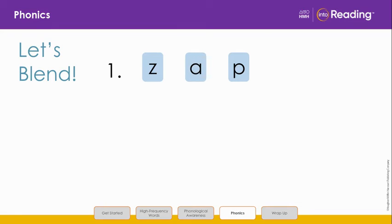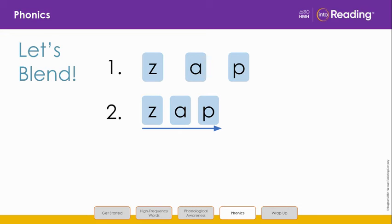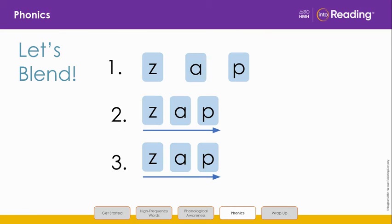We are going to blend the letters in line 1 to read another word. Say the letters and sounds with me: Z, Z, A, A, P, P. Push the letters together and listen as I blend the word: Z, A, P — ZAP. Your turn. Blend the word with me: Z, A, P — ZAP. Super!